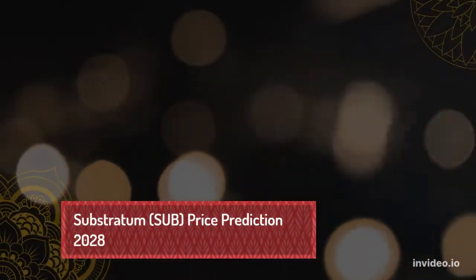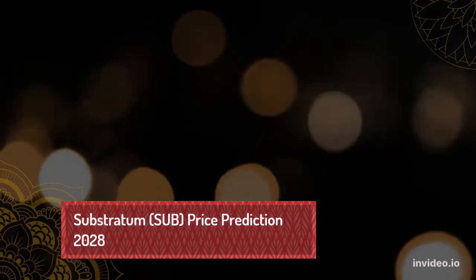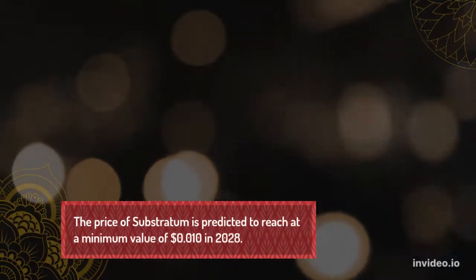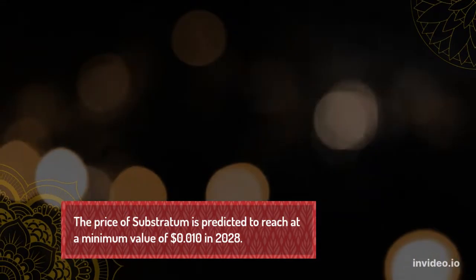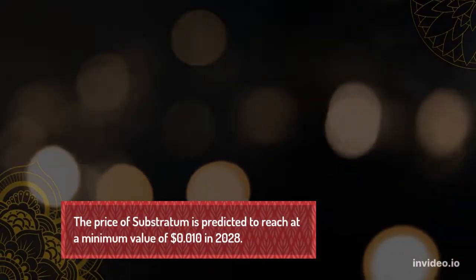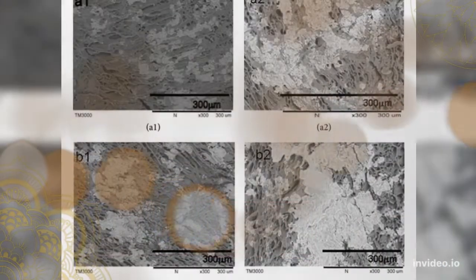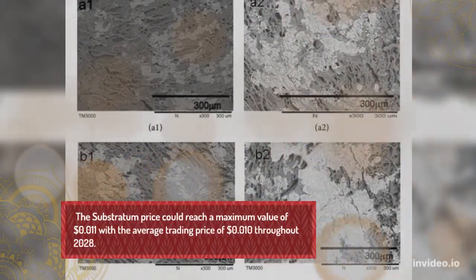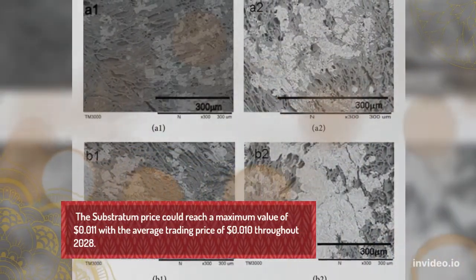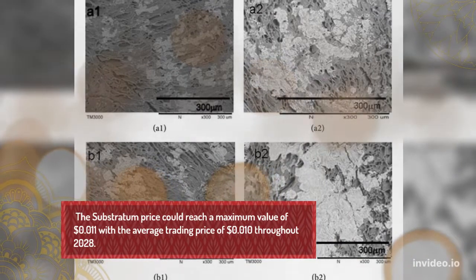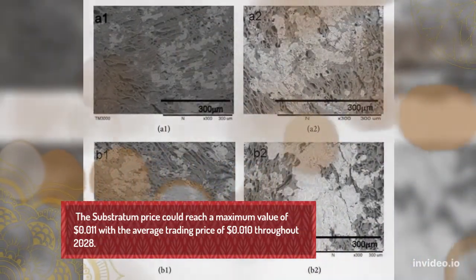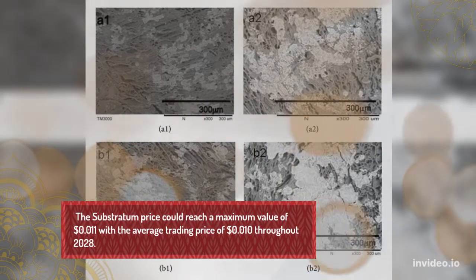Sub-Stratum Price Prediction 2028: The price of Sub-Stratum is predicted to reach a minimum value of $0.010 in 2028. The Sub-Stratum price could reach a maximum value of $0.011 with an average trading price of $0.010 throughout 2028.